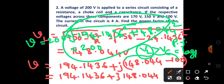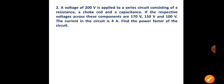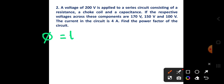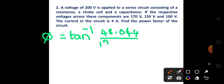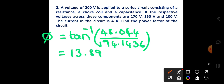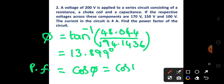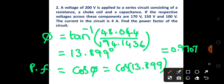The phase angle φ = tan⁻¹(imaginary / real) = tan⁻¹(48.044 / 194.1436). Make sure your calculator is in degrees mode. You will get φ = 13.899°. Therefore, the power factor is cos(13.899°) = 0.9707 lagging. Make sure you also mention whether the power factor is lagging or leading.